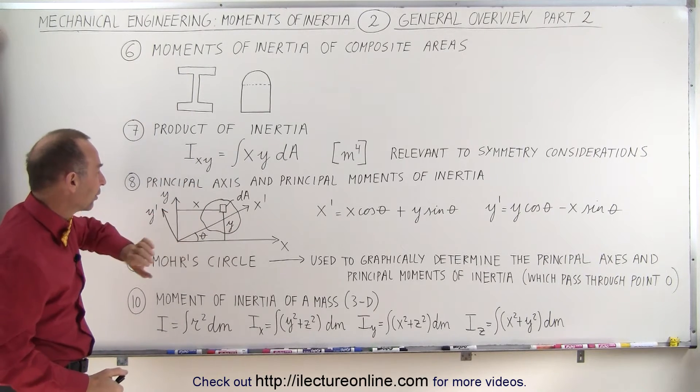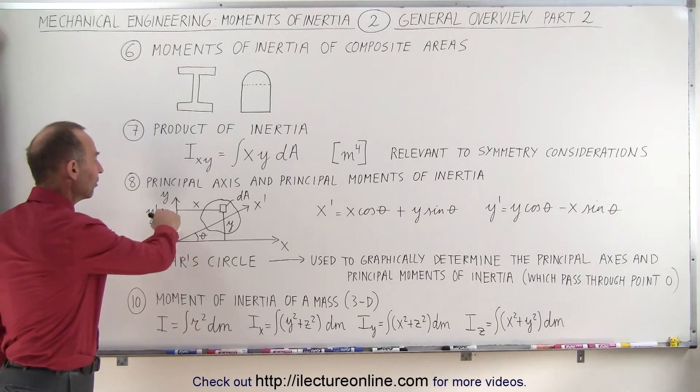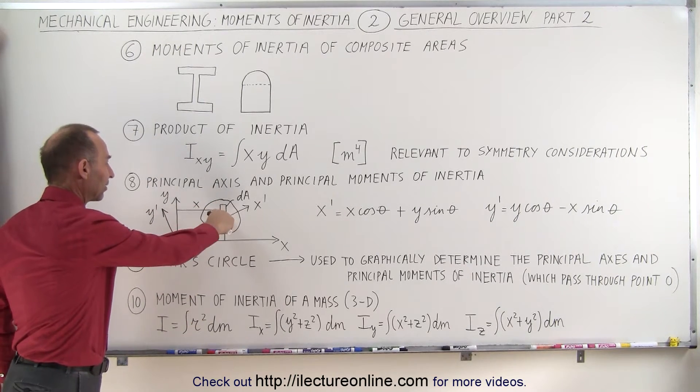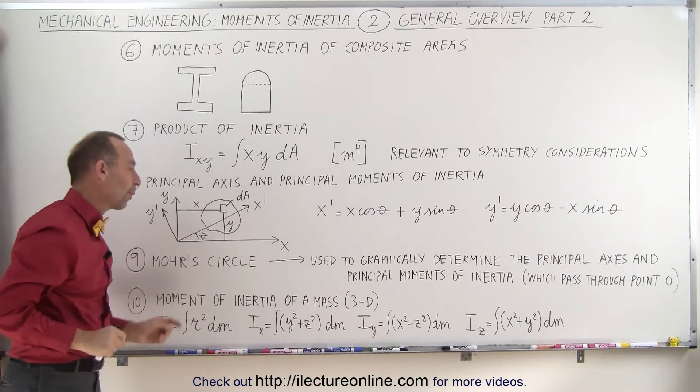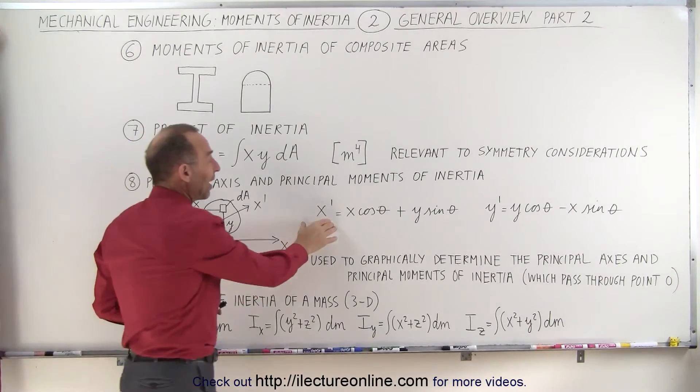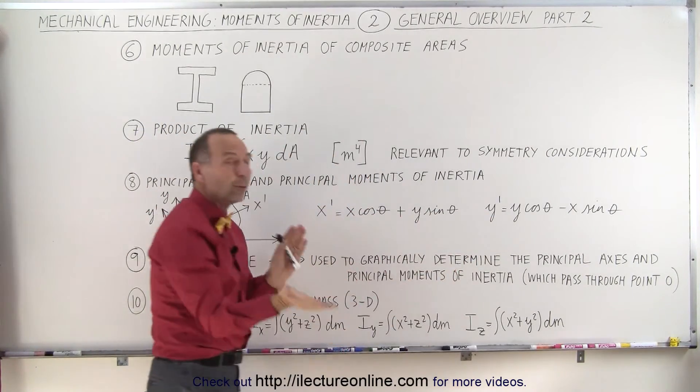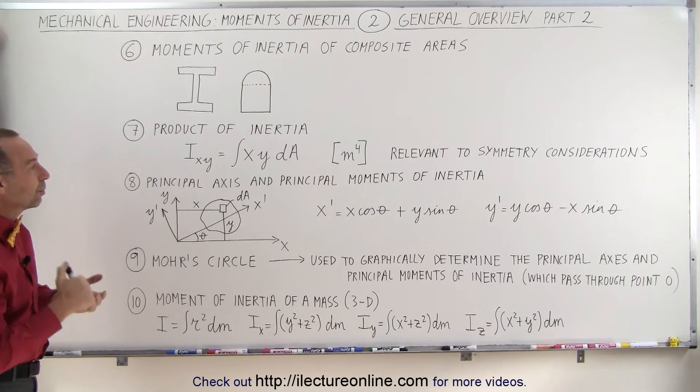Again we have an area or we have a mass. We find in this case the area, we find the dA, the distance from the x-axis and the y-axis. This is the distance from the x-axis, this is the distance from the y-axis, and then we're going to learn how to rotate those and find the distances relative to the new rotated axes. So we call those the principal axis and principal moments of inertia.